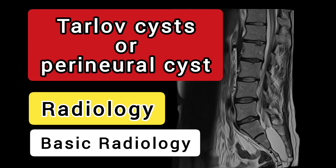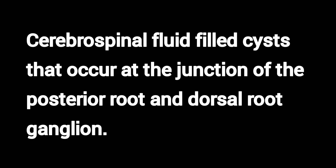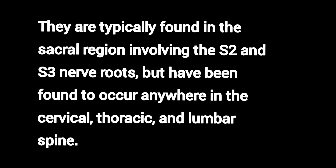Tarlov cysts, also known as nerve root cysts or perineural cysts, are cerebrospinal fluid-filled cysts that occur at the junction of the posterior root and dorsal root ganglion. The cysts are located between the perineurium and endoneurium. They are typically found in the sacral region involving the S2 and S3 nerve roots, but have been found to occur anywhere in the cervical, thoracic, and lumbar spine.